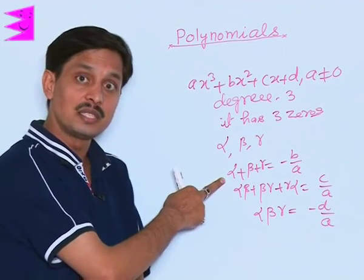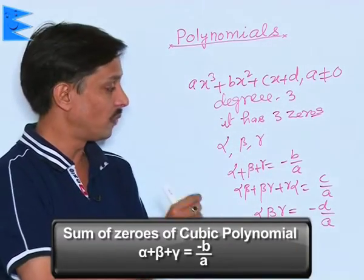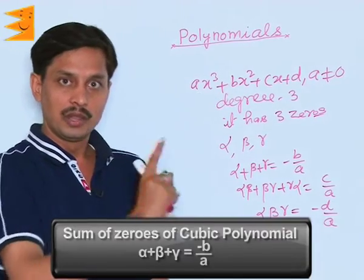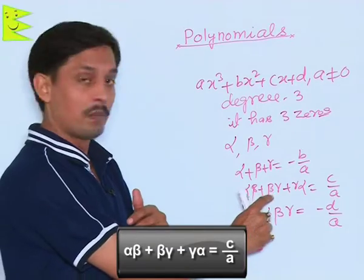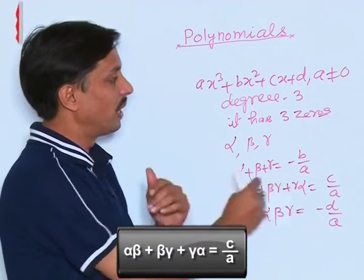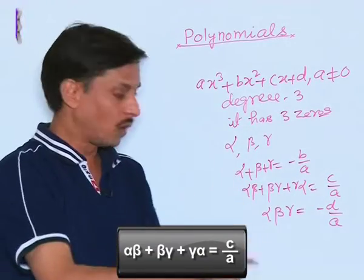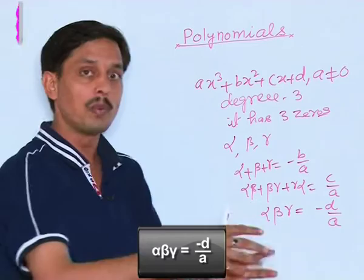There are three relations: α + β + γ, the sum of three zeros of any cubic polynomial, is -B/A. Then sum of zeros taken 2 by 2, that is αβ + βγ + γα, is C/A. Then product of all three zeros, αβγ, is given by -D/A.